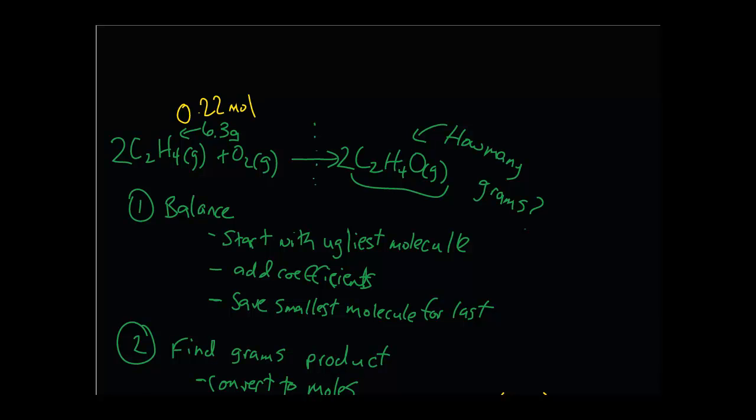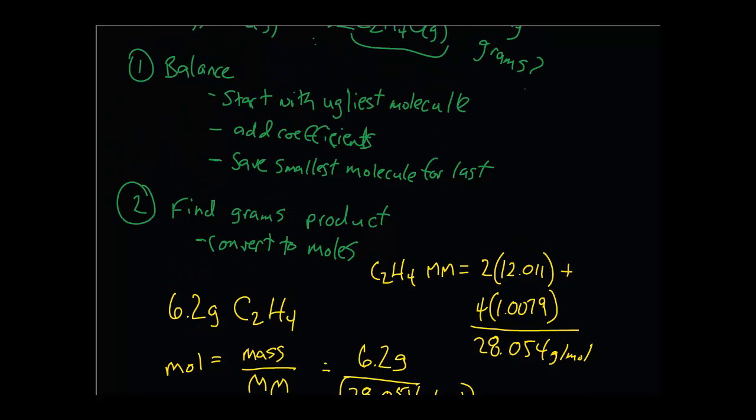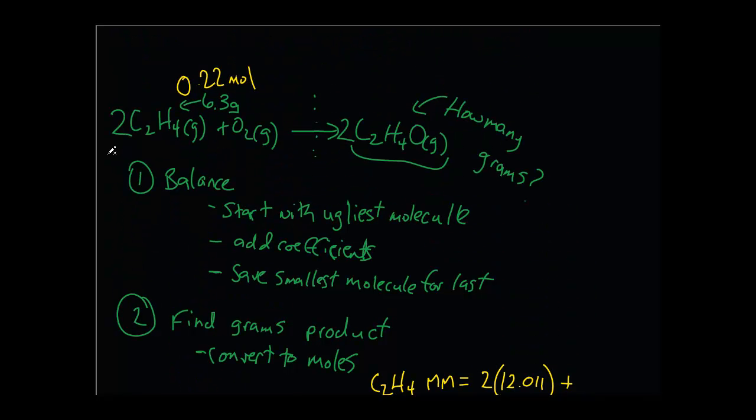Some people actually make the mistake of, when they convert to molar mass, they say, oh, well, we have 2 moles, so we got to put a 2 in front of the molar mass. No, the molar mass is always grams per mole, that's for 1 mole. Don't let the stoichiometry confuse you. So in other words, even though this coefficient in front is 2, 6.3 grams of C2H4, no matter what this coefficient states, is 0.22 moles.